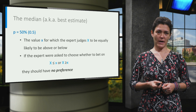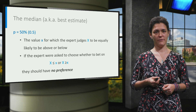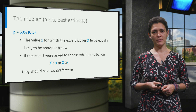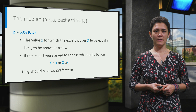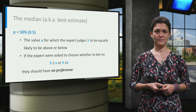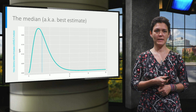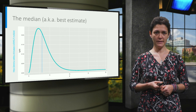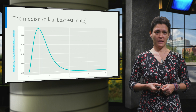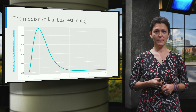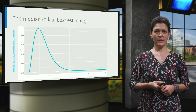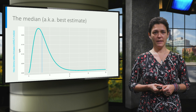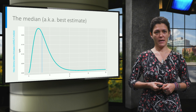The median is the value for which the expert judges that it is as likely for the variable to be above x as it is for the variable to be below x. If the experts were asked to choose whether to bet on the variable being less than or equal to x or on the variable being larger than or equal to x, they should have no preference. Going back to the southeastern United States summer rainfall example, the vertical line on this graph corresponds to the median and it sits around value 3.